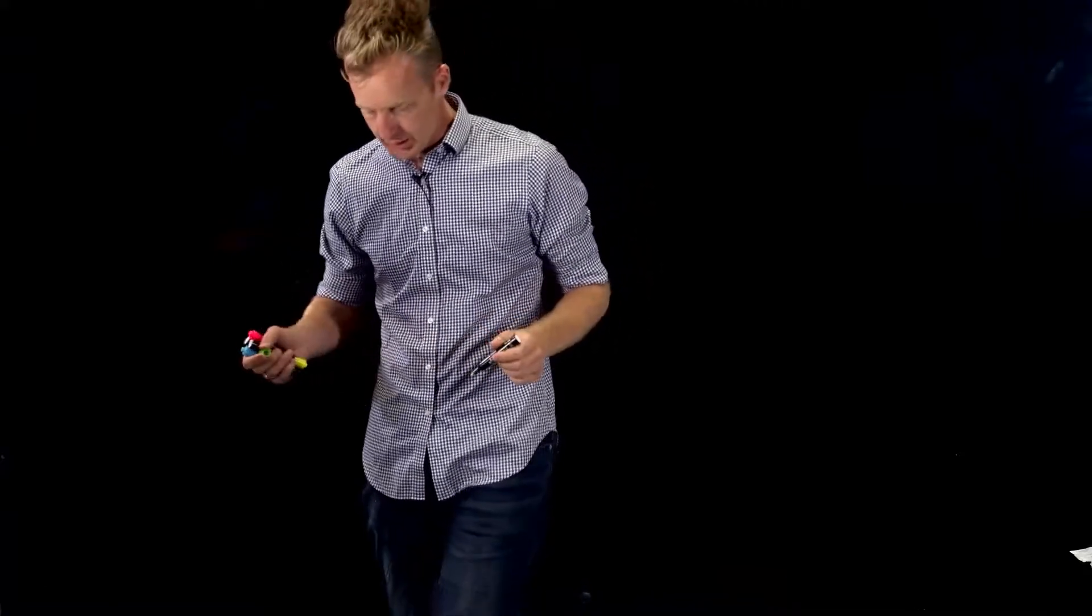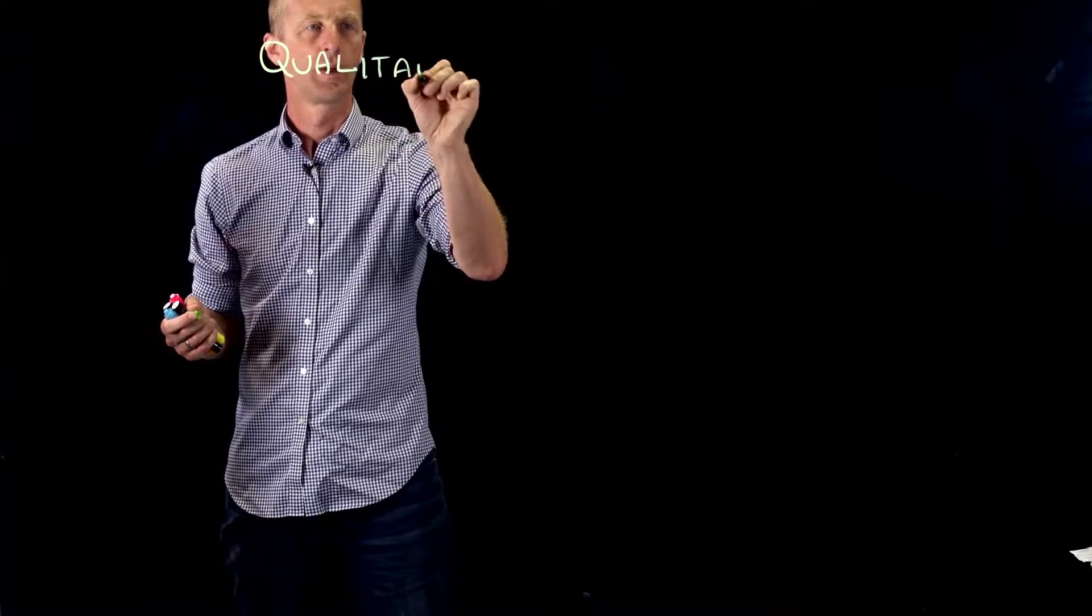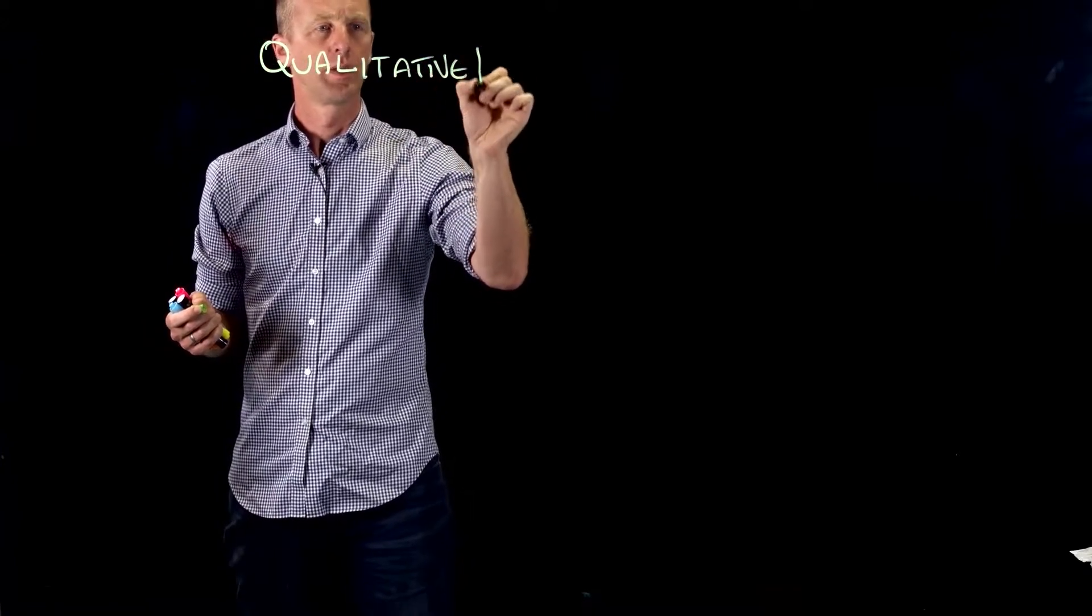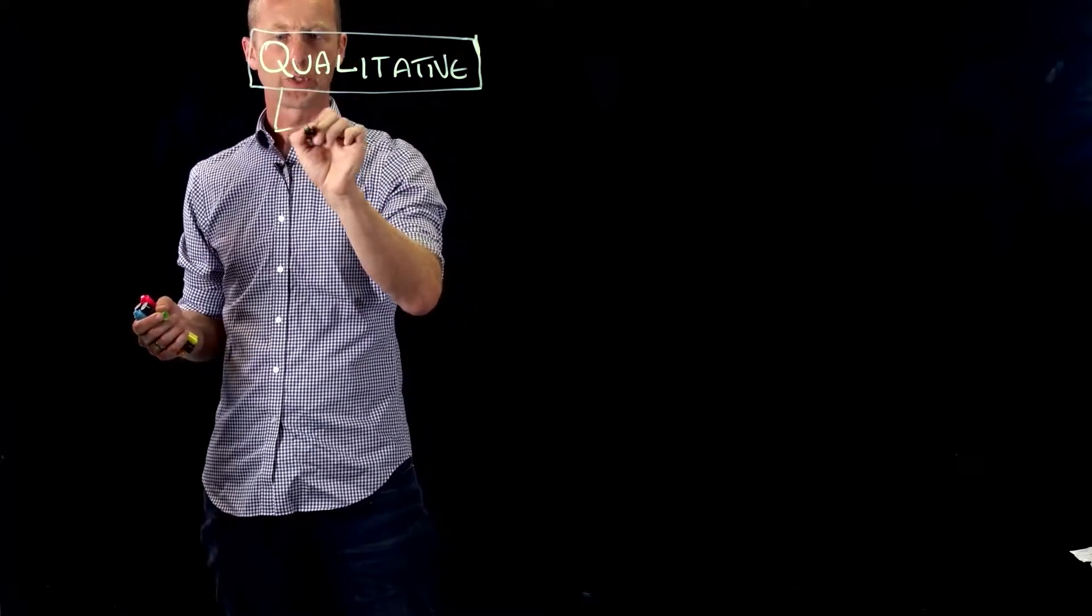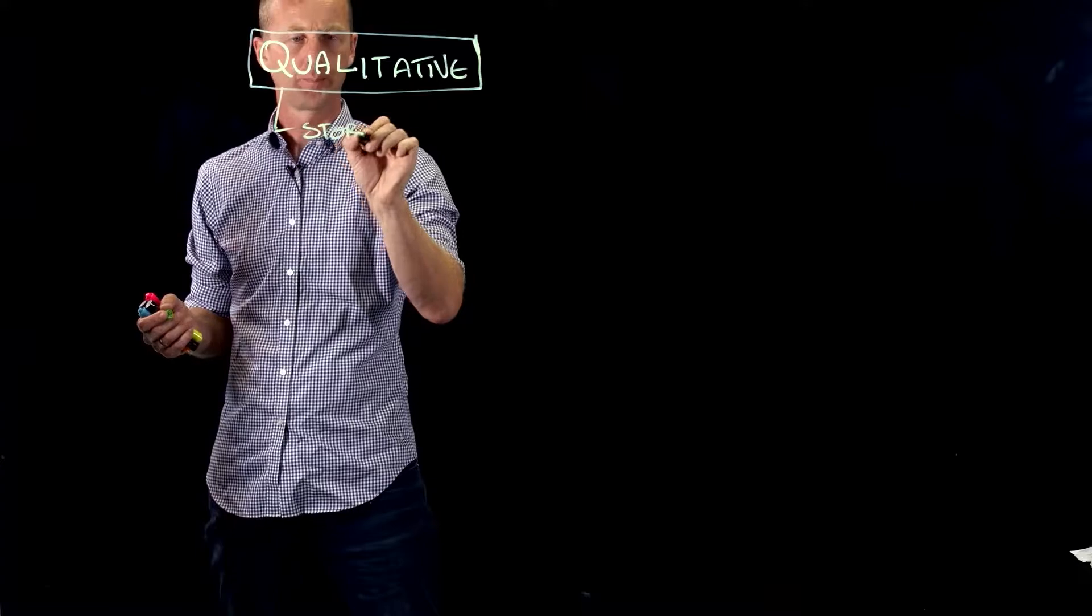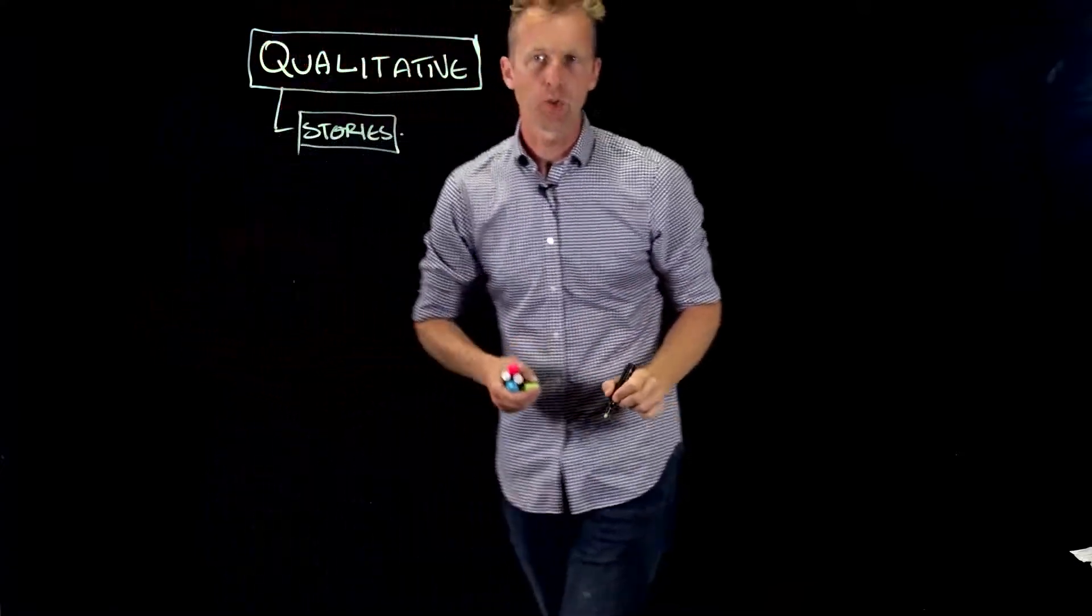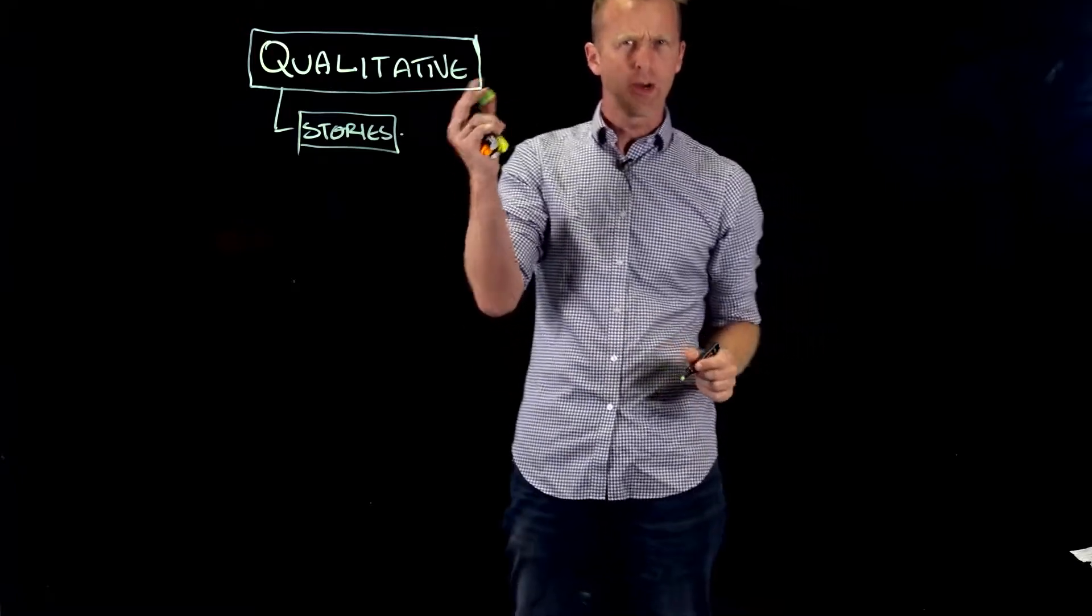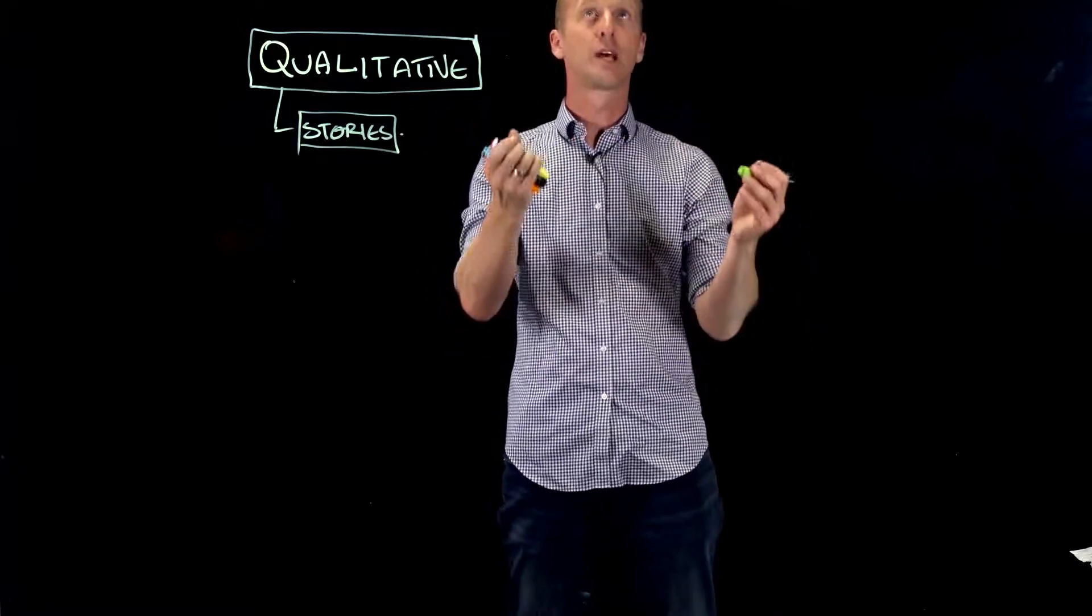So, there are two basic camps, two basic categories of research method. One is the qualitative. Now, the qualitative approach is focused on stories. You might have heard this before, but basically the qualitative approach says, what we want to know is about people's experience.